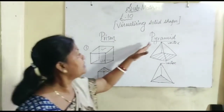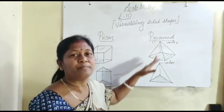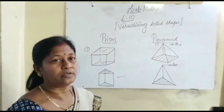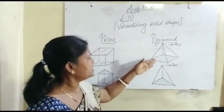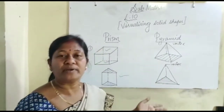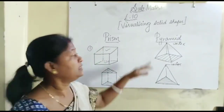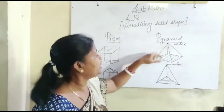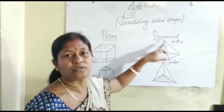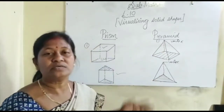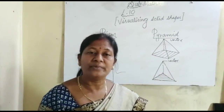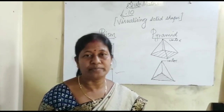In the case of a pyramid, the top and base are not congruent polygons. The base can be a triangle, square, or rectangle, but the top is a single point — that is the vertex only. This is the difference between a pyramid and a prism.